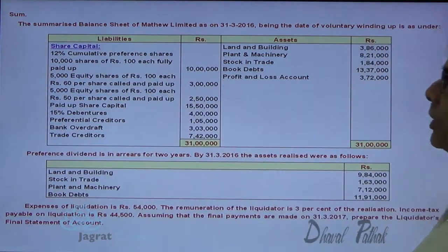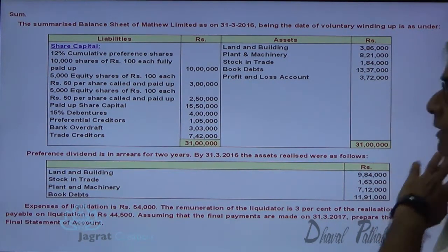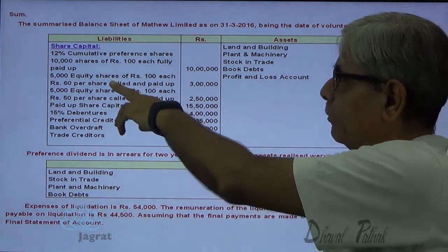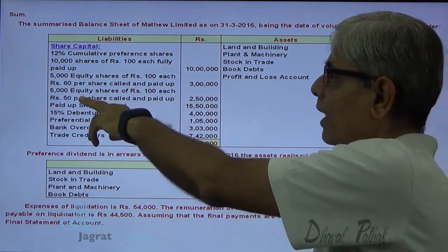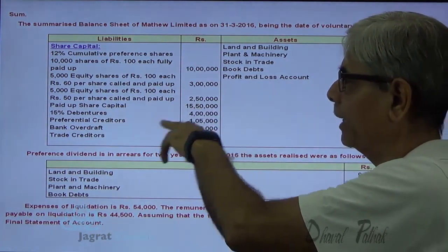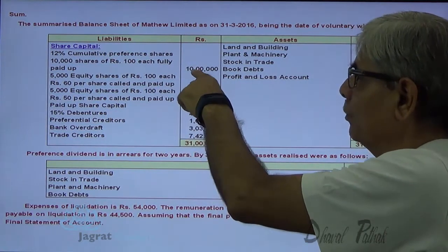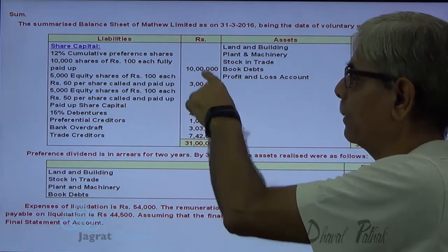The summarized balance sheet of Capsule Limited as on 31st 2016, being the date of voluntary winding up, is as under. On the asset side you are given land and building, plant and machinery, stock in trade, book debts, profit and loss account debit. Cumulative preferences: 10 lakh. 5,000 equity shares of rupees 100 at 60 per share paid up. 5,000 equity shares of rupees 100 at 50 per share called up and paid up. So 10 lakh plus 3 lakh plus 2 lakh 50,000 — total 15 lakh 50,000 is the total paid-up capital.